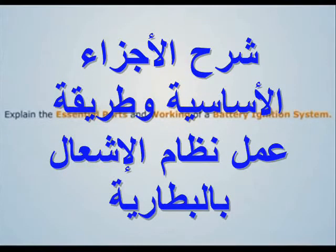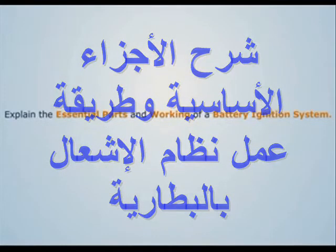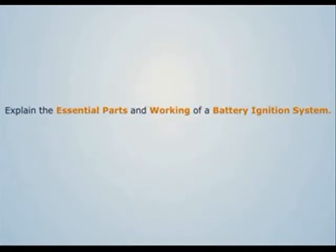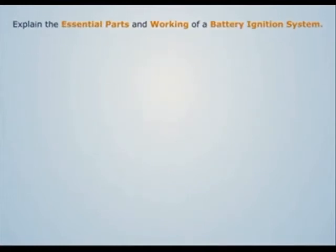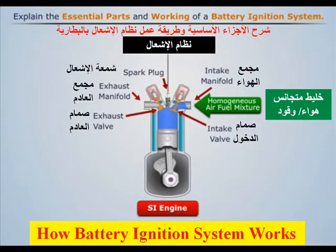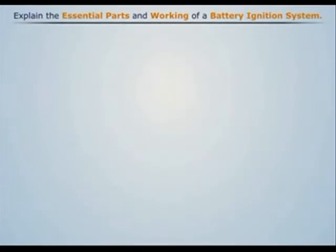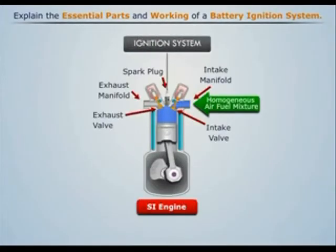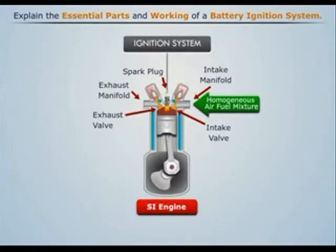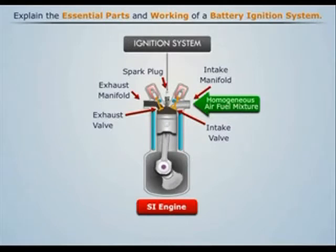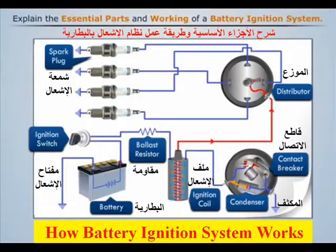Explain the essential parts and working of a battery ignition system. The ignition system is a complex electrical system whose function is to produce a spark and initiate the combustion process.